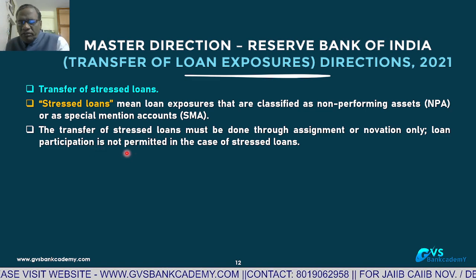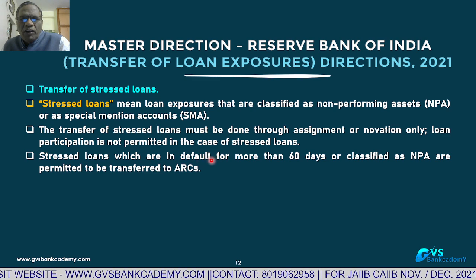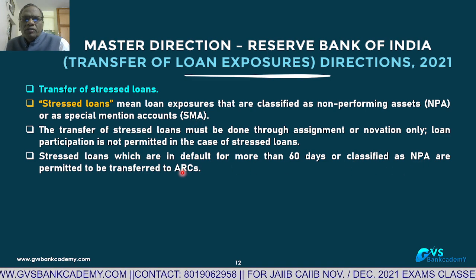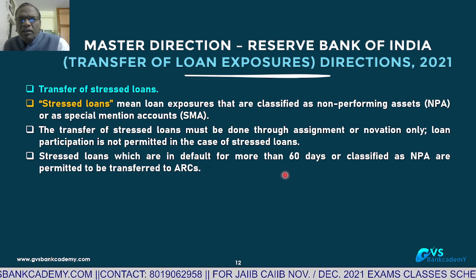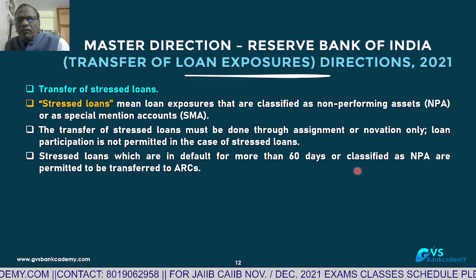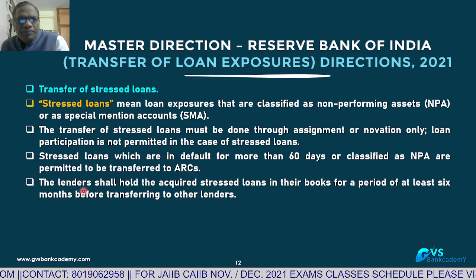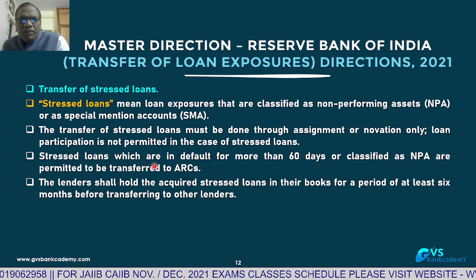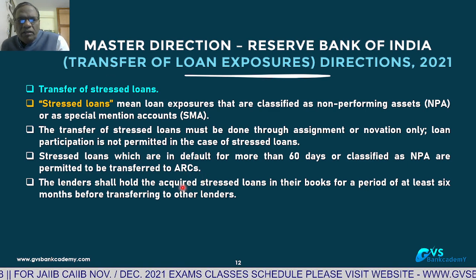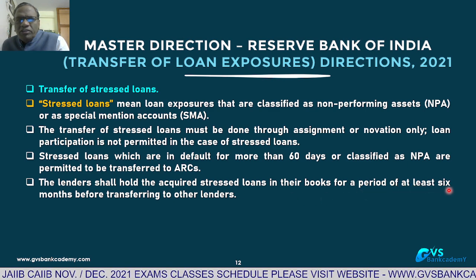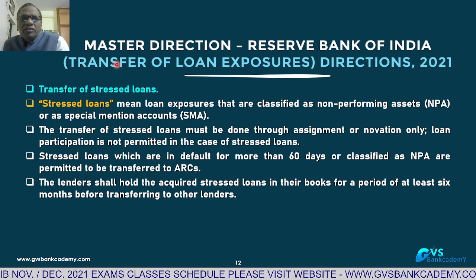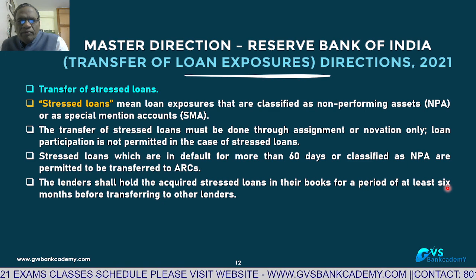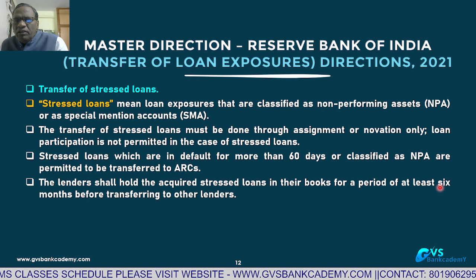Stressed loans in default for more than 60 days (SMA 2 or NPA) are allowed to be transferred to Asset Reconstruction Companies (ARCs). At the time of acquisition, the lender (ARC) should hold the acquired stressed assets for at least 6 months before transferring to others. From the date of purchase of the loan from other banks, the ARC must retain it in their books for at least 6 months before transferring to other lenders.